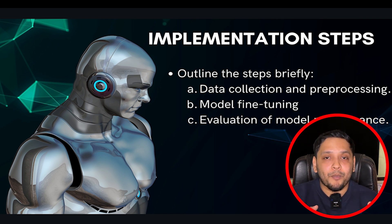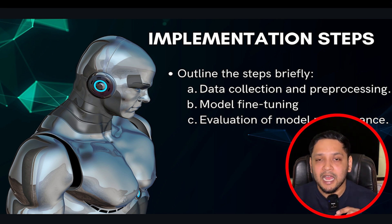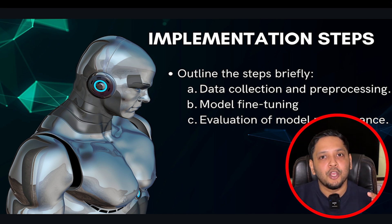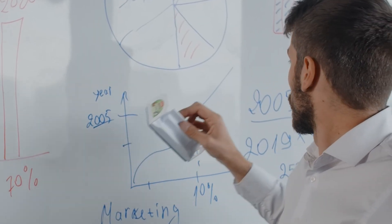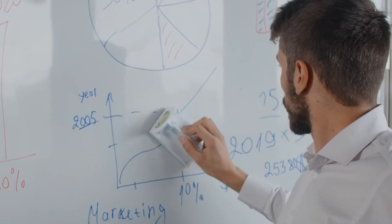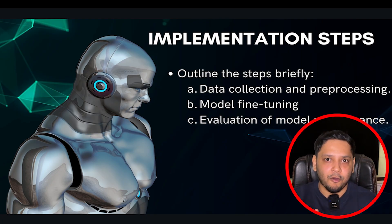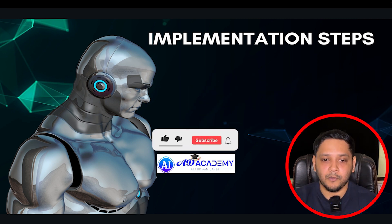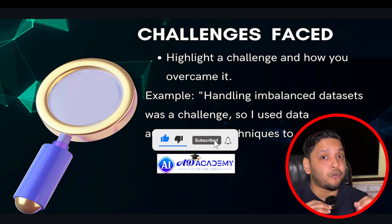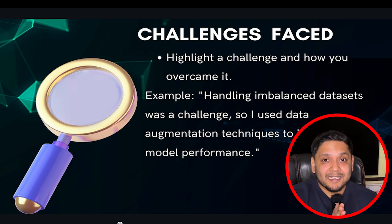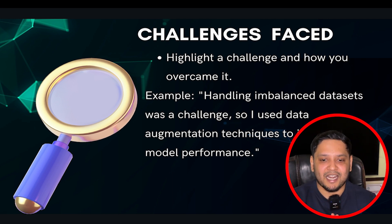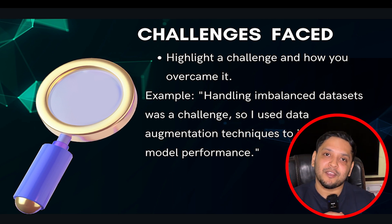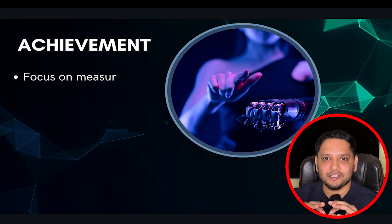Data can be collected from open-source platforms or other internet sources, and then you process it — this is important because raw data cannot be directly fed into an AI model. Second is model fine-tuning: if you get a large language model from the internet, Hugging Face, or another platform, you fine-tune it to align with your specific use case. You should also highlight a challenge you faced and how you overcame it — for example, handling an imbalanced dataset was a challenge, so I used data augmentation techniques to improve model performance.